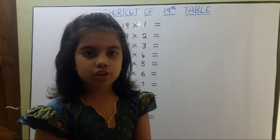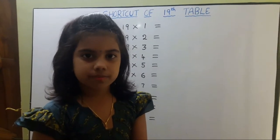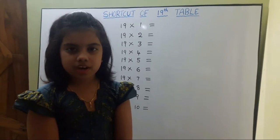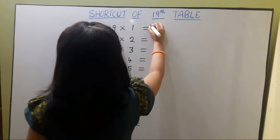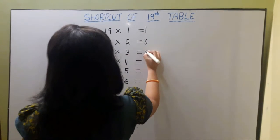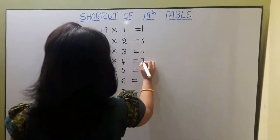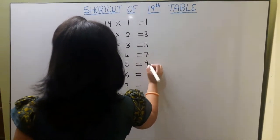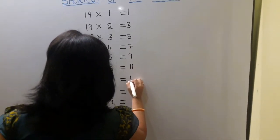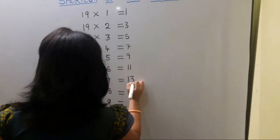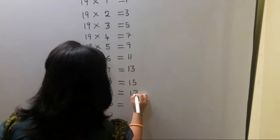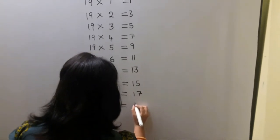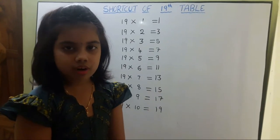Finally I am telling the shortcut of the 19th table. First we should write up to down 1 to 19 odd numbers. Next we should write down to up 0 to 8.